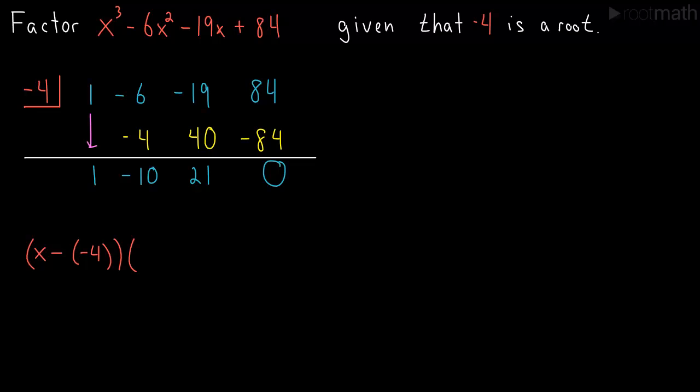And the remaining factor is given by these coefficients. So this is like the x squared term, this is the x term, and this is the constant term. So we have 1 x squared, so 1 x squared.